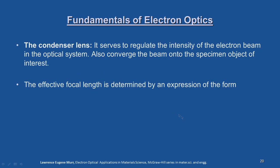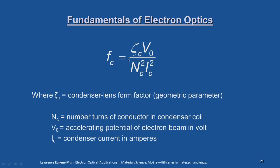The condenser lens serves to regulate the intensity of the electron beam and converge it onto the specimen. The effective focal length is determined by f_c = ζ_c · V₀ / (n_c² · i_c²), where ζ_c is the condenser lens form factor (a geometric parameter), n_c is the number of turns of conductor in the condenser coil, V₀ is the acceleration potential in volts, and i_c is the condenser current in amperes.